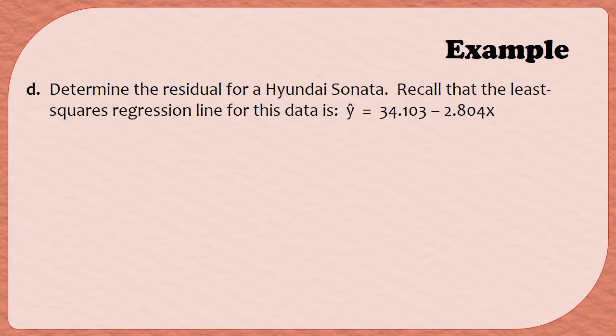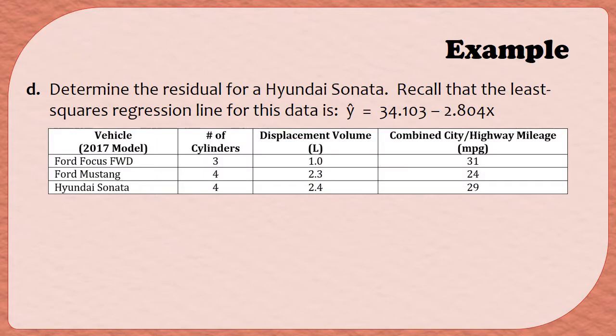We also have a data table. I don't need the full thing, I'm just going to produce the first couple of rows here, because the Sonata was the third vehicle on the list. Now unlike last time, last time we started with a prediction, and this time we don't have a prediction yet. So that's actually our first step in finding the residual, is finding the predicted y value.